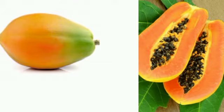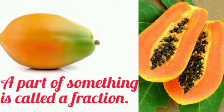Suppose you have a papaya. If you want to divide it into two equal parts, you cut it into two equal halves. One half of something means one part of two equal parts of that thing. A part of something is called a fraction.